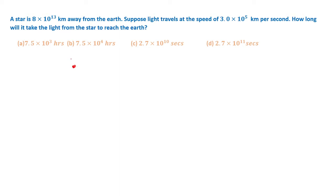Here the distance between earth and star is given, the speed of light is given, and we need to find out the time duration for this light to reach earth.